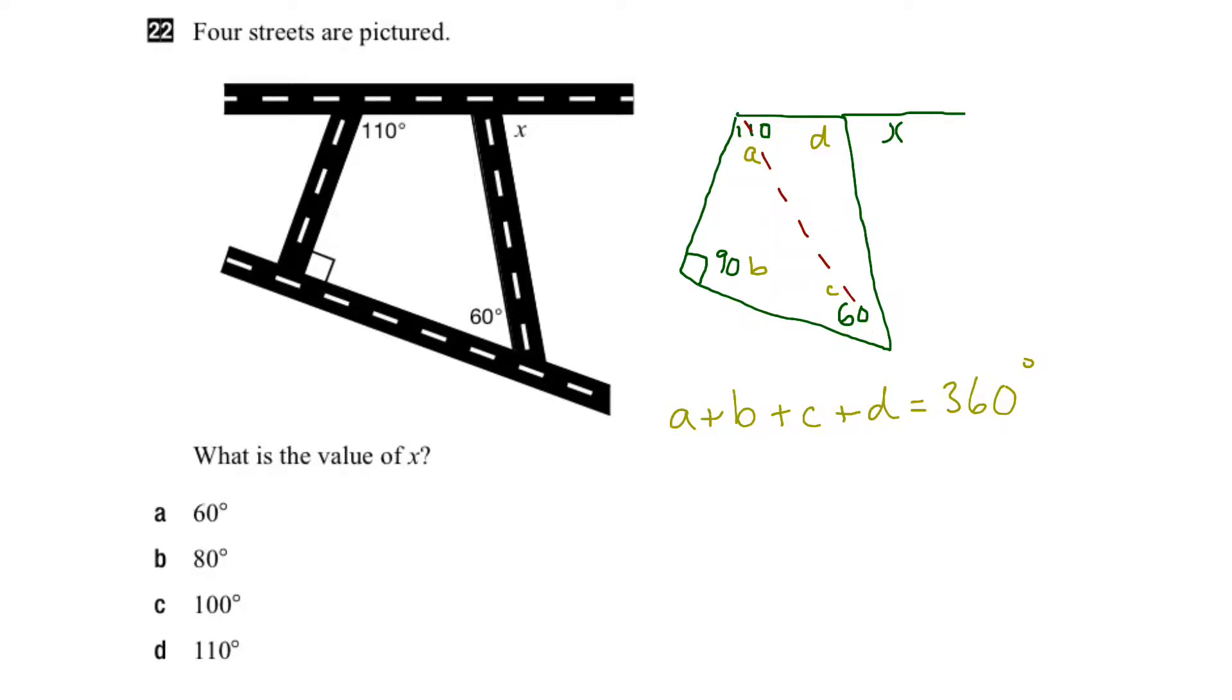Okay, let's undo that. So we remove some of the clutter and work on our equation here. We know that a is 110, we know that b is 90, and we know that c is 60. So therefore, if I substitute those in, we have one variable left that we can solve for.